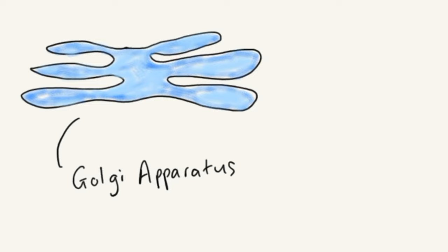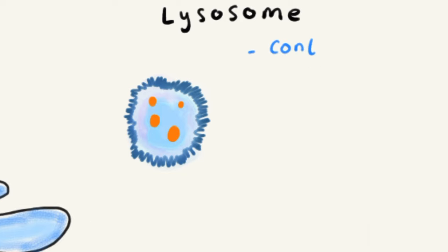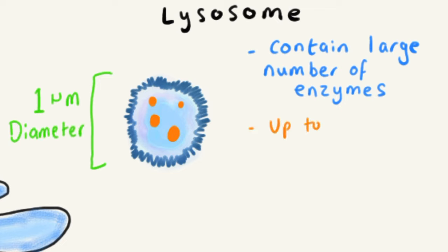Lysosomes are formed from the vesicles produced by the Golgi apparatus and they contain a large number of enzymes like proteases and lipases. They are about one micrometer in diameter and they can contain up to about 50 enzymes inside one single lysosome.